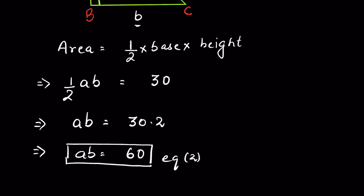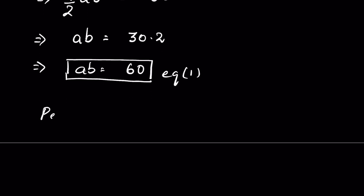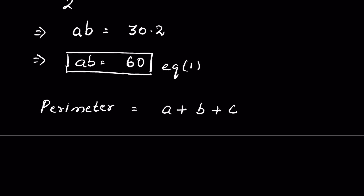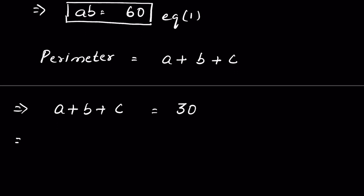We are going to use three concepts. First, area of a right angle triangle is half into base into height. Second, perimeter of the triangle is equal to sum of all three sides: a plus b plus c. Given the perimeter is 30 cm, from here we can find a plus b is equal to 30 minus c. Let this be equation two.